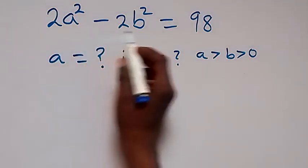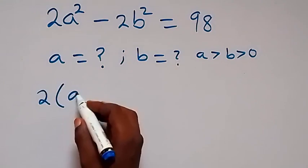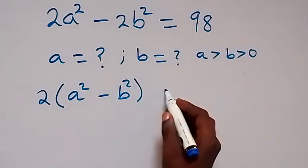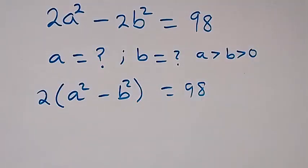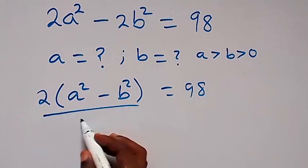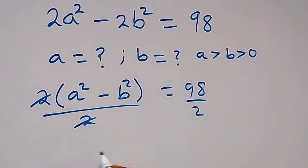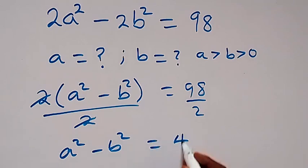We can factor two out, giving us 2 times (a² minus b²) equals 98. In the next step, divide both sides by 2 — the 2 cancels out — and we are left with a² minus b² equals 49.